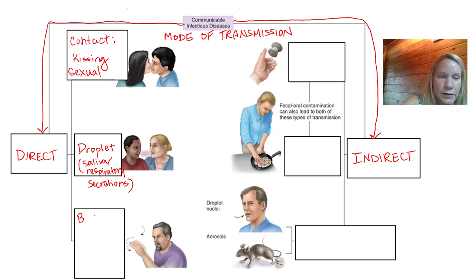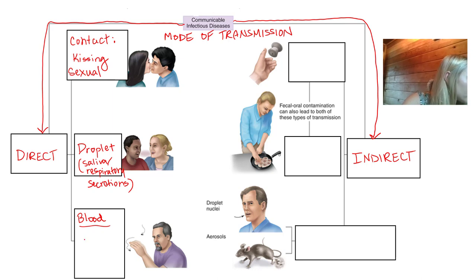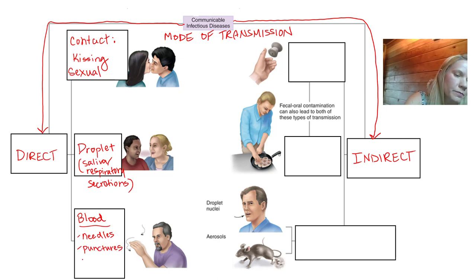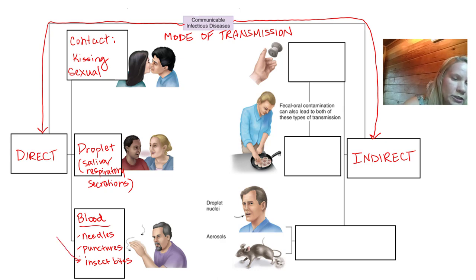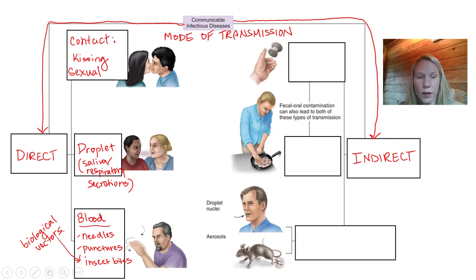The third category of direct transmission is blood. The pathogen gets into your blood through needles, puncture wounds in the skin, or insect bites — mosquitoes being a good example. These insects are called biological vectors. They are themselves infected, and they can directly transmit that pathogen to you by biting you, so the pathogen goes directly into the blood of the human.